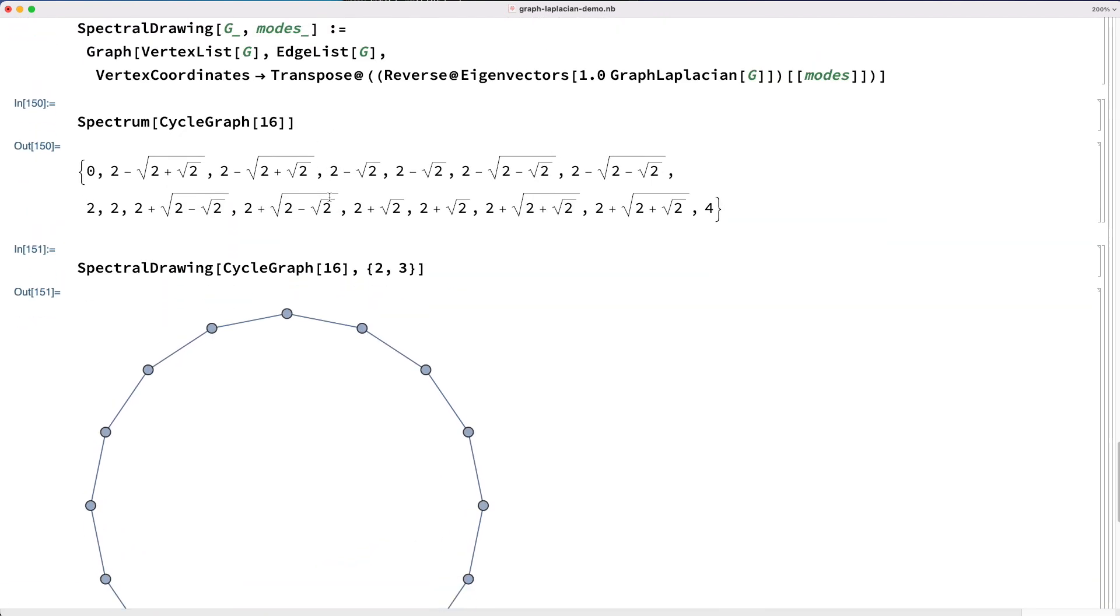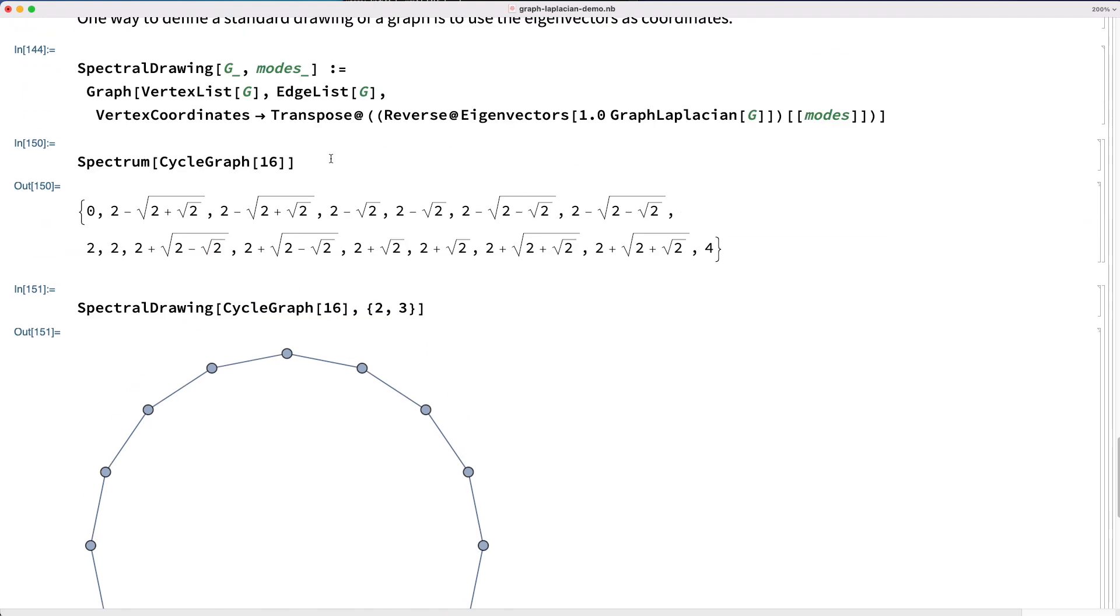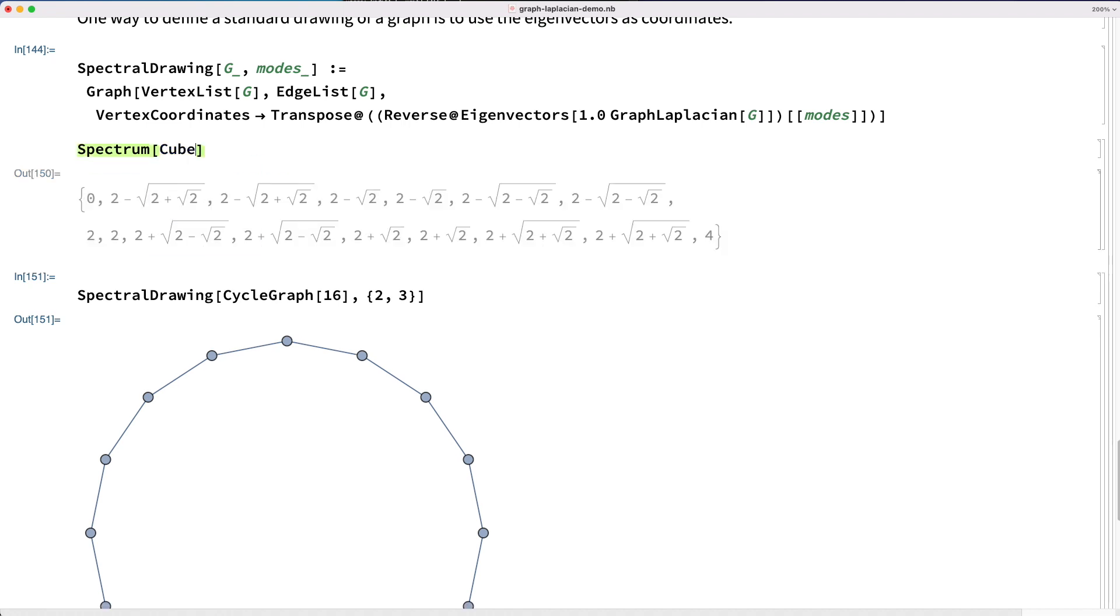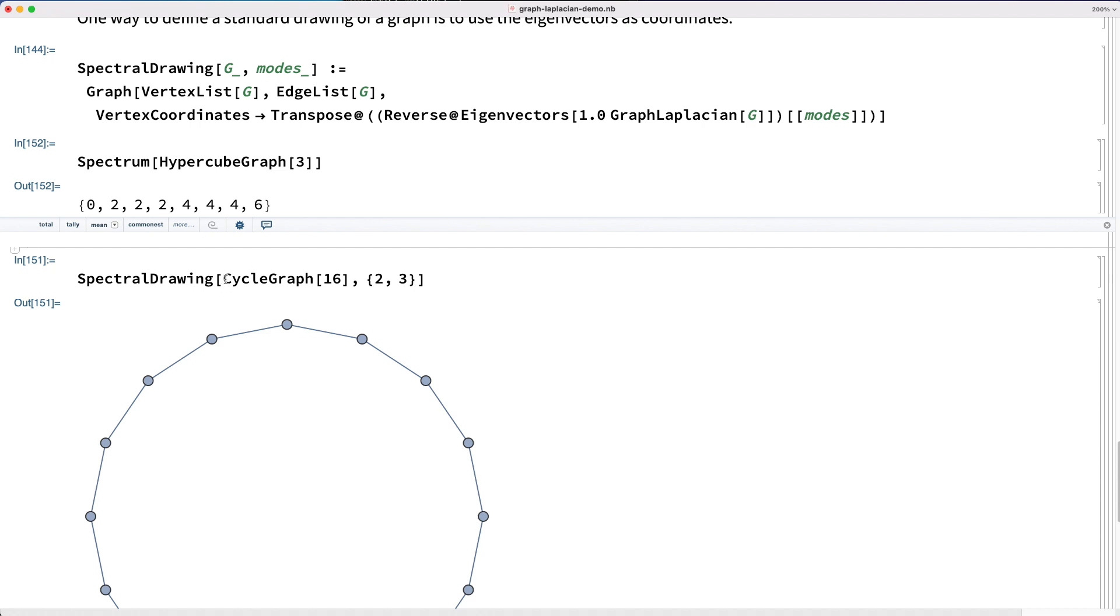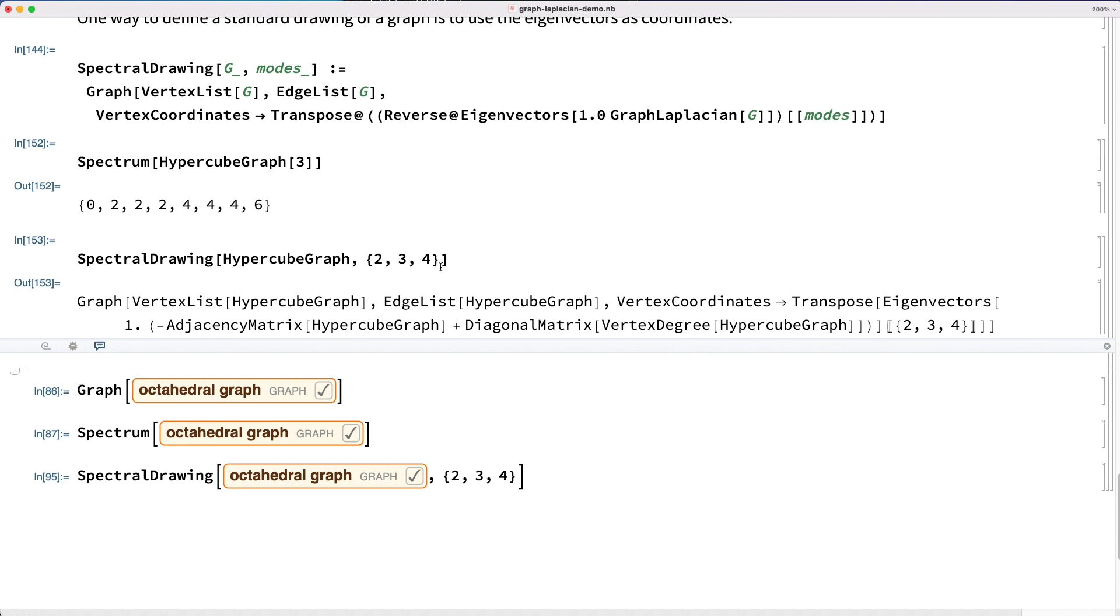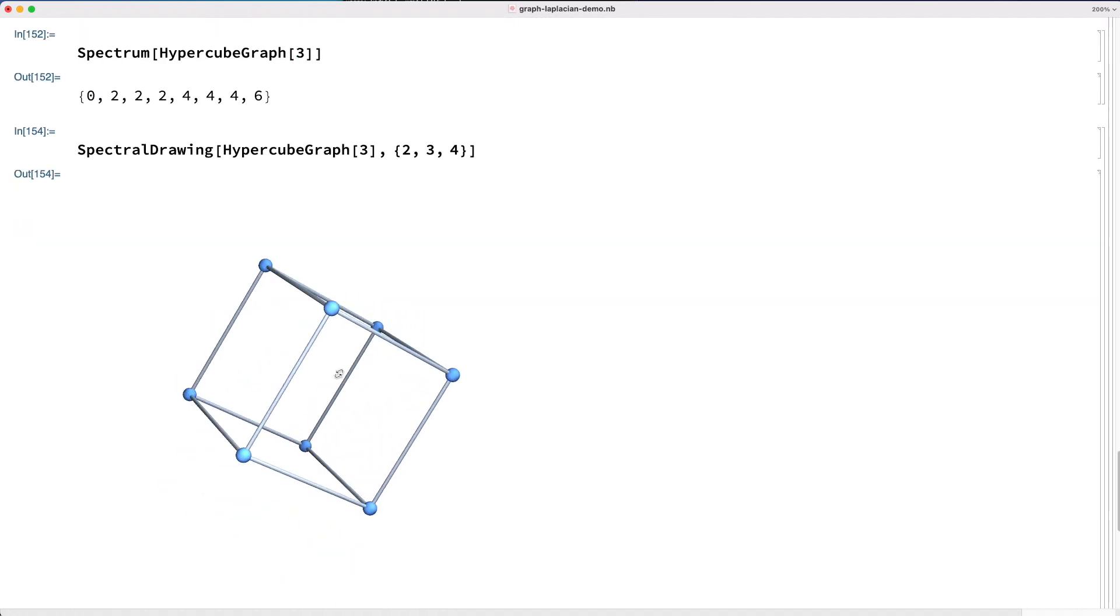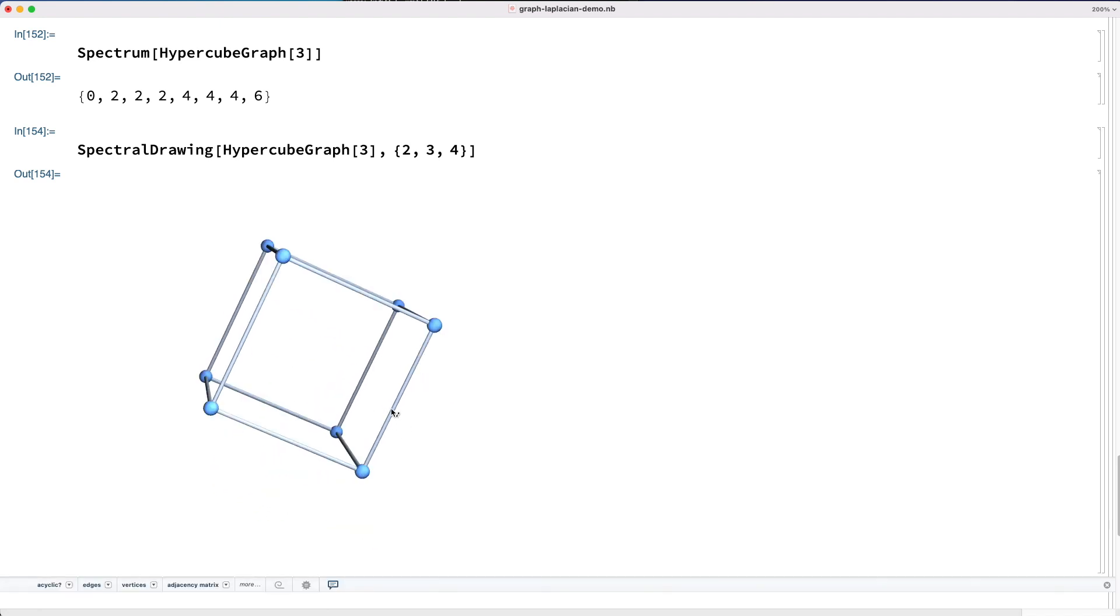So one of the things we can conclude from this, and we'll study this as a theorem later in the course, is that the number of times the lowest nonzero eigenvalue is repeated is kind of telling you the dimension the graph wants to be in. For instance, if we take this hypercube graph, we see there are three twos in the spectrum. And if we take the spectral drawing of the hypercube graph with modes 2, 3, and 4, we see it's exactly the embedding we expect to see in three dimensions.